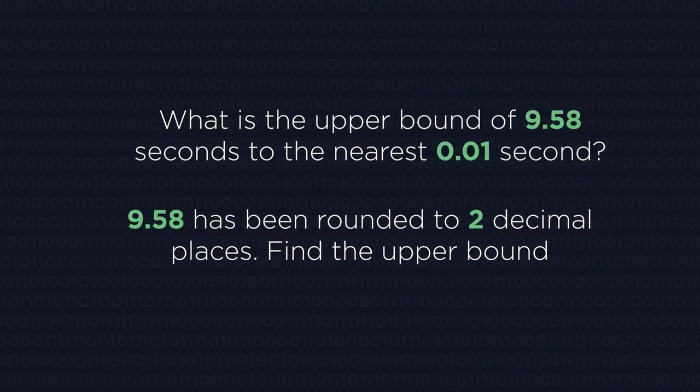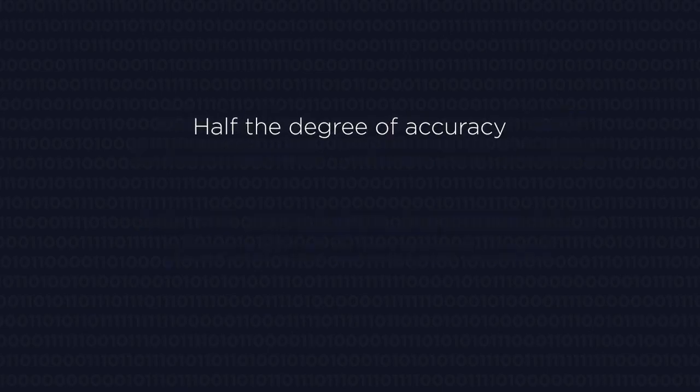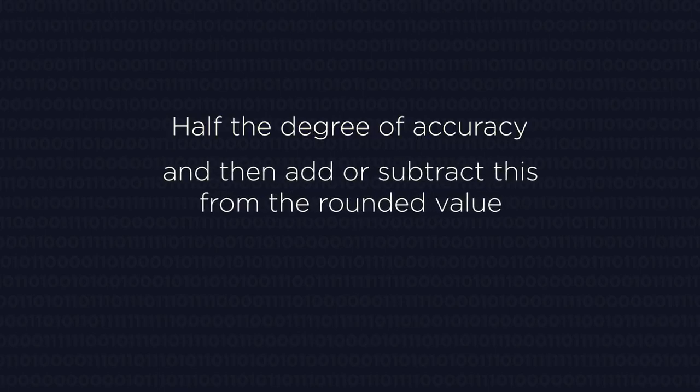A lot of us find measures like time, weight, length easier to work with than decimal places and significant figures. But just do the same thing. Half the degree of accuracy and then add or subtract this from the rounded value.